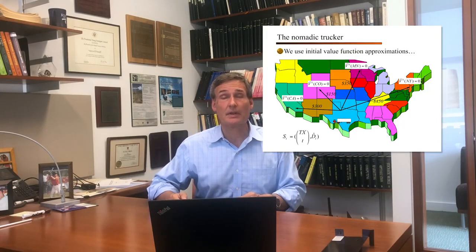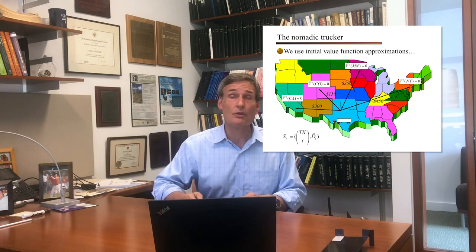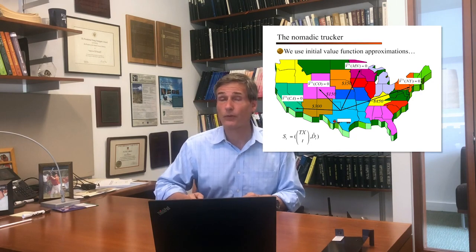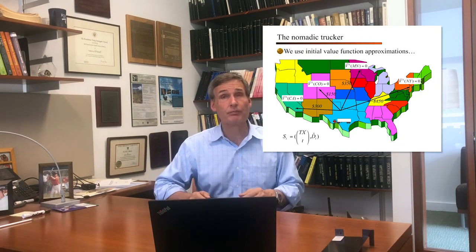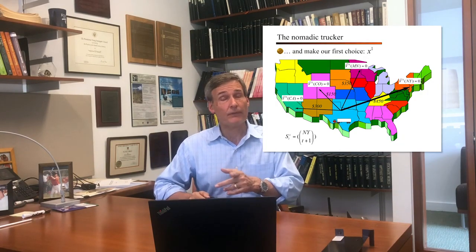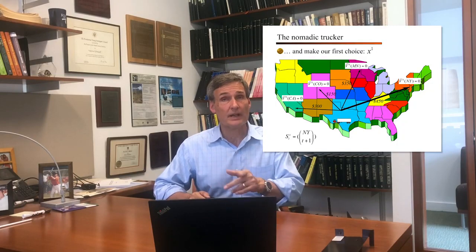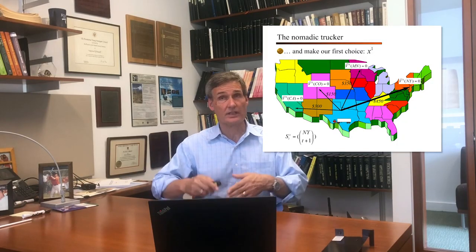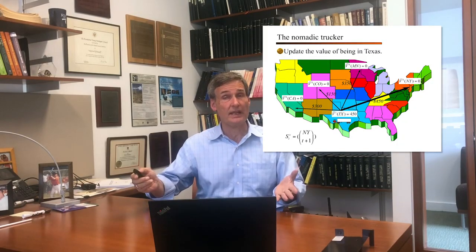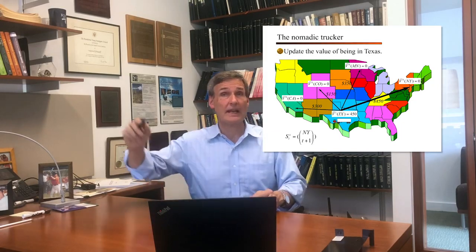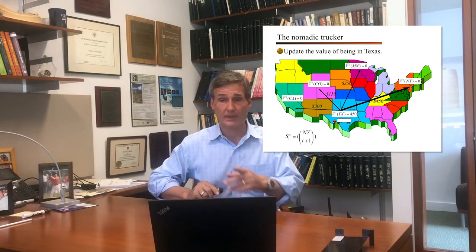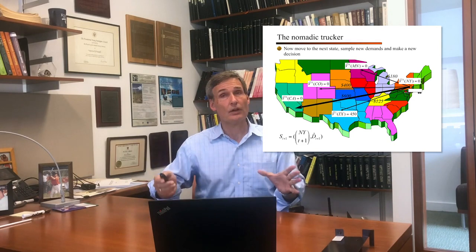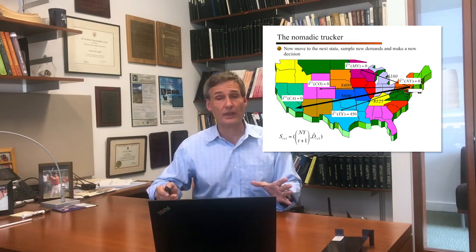Looking at all of them, the load going to New York is $450 — that looks best. I'll pick that one, and before I move, I'm going to update the value of being in Texas to $450, because that's how much I made — the $450 added to the downstream value of zero. Now let's move to New York and repeat the whole process all over again.